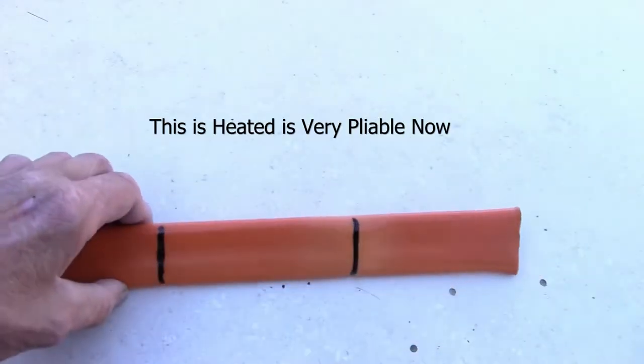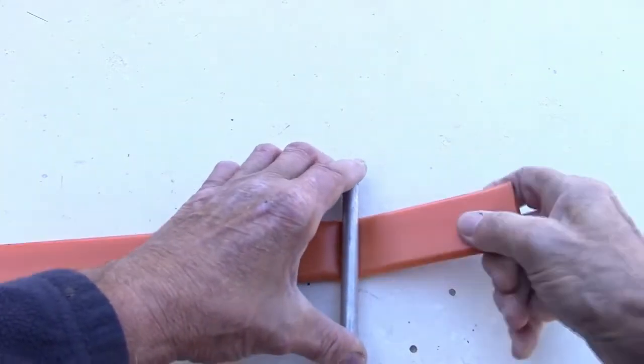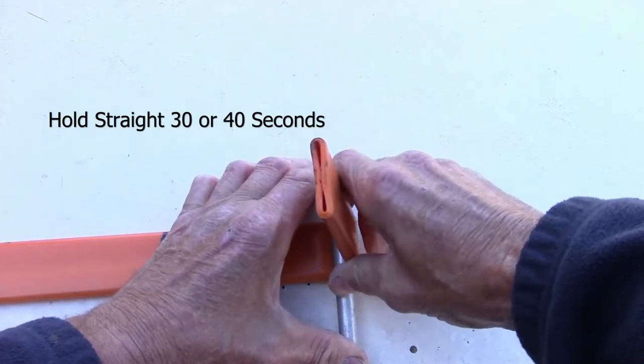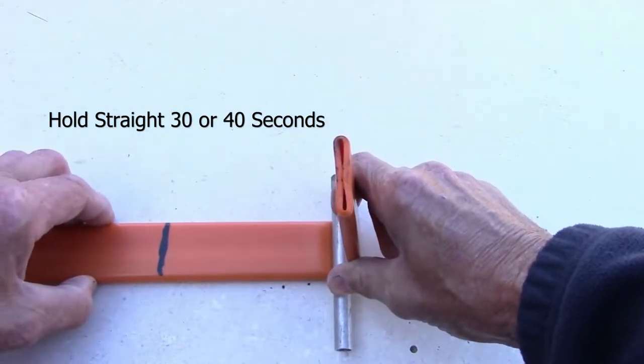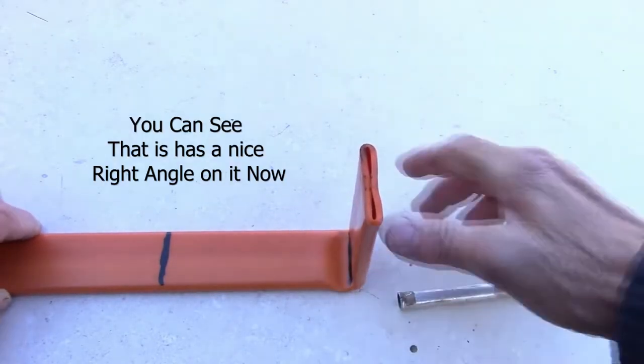So this is how it's very pliable now. Now we get the small pipe, it's a half inch pipe, and you bend it over like this and hold it straight for 30 or 40 seconds so it cools off. Now you can see it's a beautiful right angle on it.